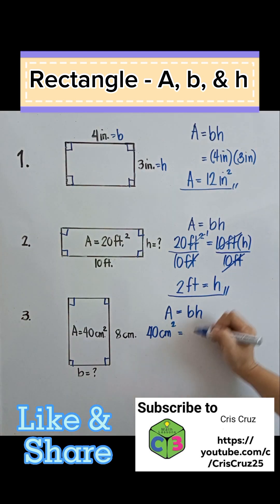To solve for the base, we're going to divide both sides by 8 cm. 8 cm here will cancel out. We'll just have base.